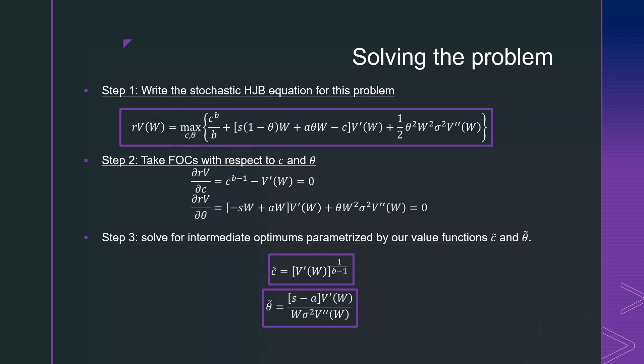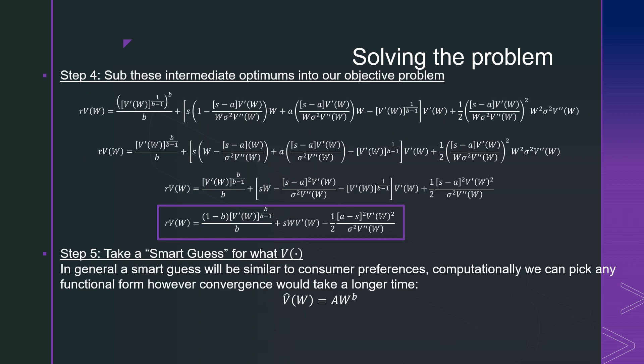We're then going to go and solve for our intermediate optimums parameterized by our value functions — that's going to be C tilde and theta tilde — and we get the following. For step number four, we're going to substitute these intermediate optimums into our objective problem. When we do that, we want to simplify this as much as possible to get this result here. This is important because we're going to use this to verify our guess. If it is a good guess, we should see no W terms in this expression once we plug it in and work through the algebra.